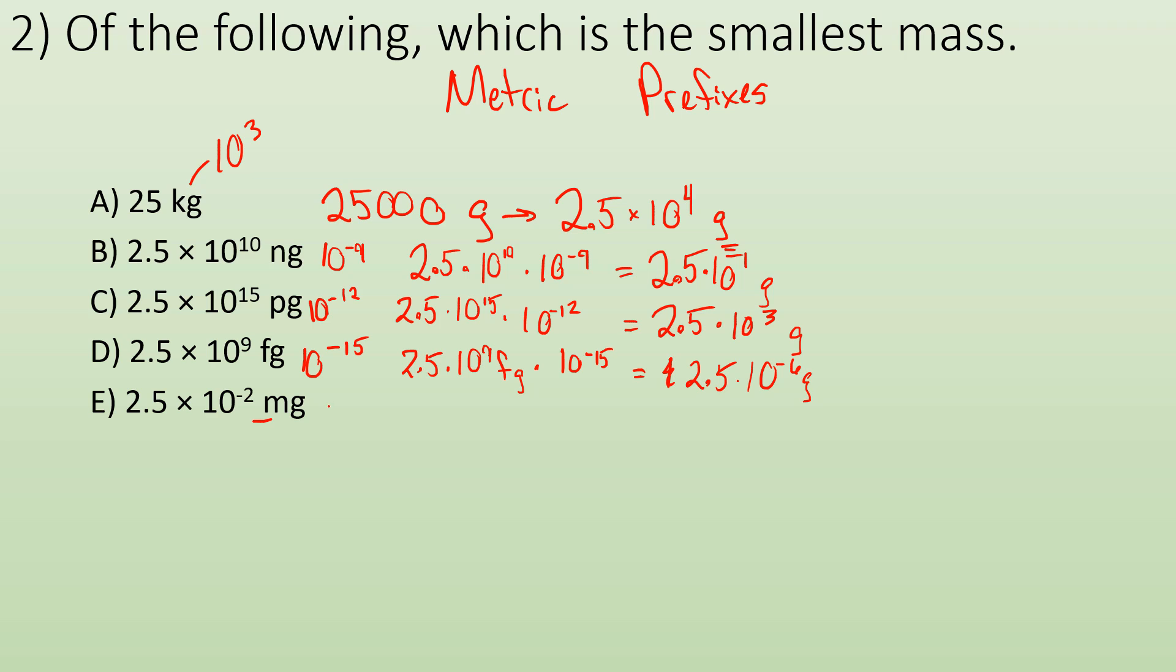So milli means 10 to the minus 3. So we got 2.5 times 10 to the minus 2 times 10 to the minus 3 equals 2.5 times 10 to the minus 5 grams.